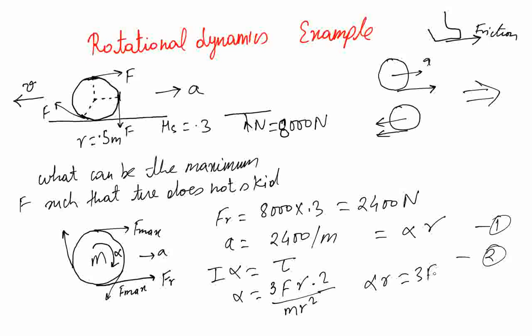There's a 2 divided by M, but this alpha·r should be equal to acceleration. So that gives me 2400 divided by M equals 6F divided by M, and that gives me F equals 400 Newtons.